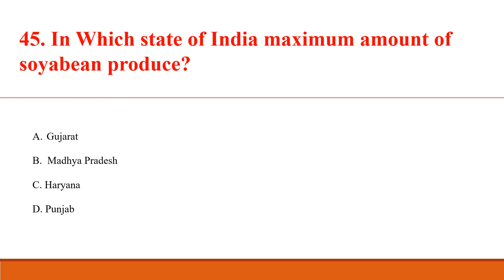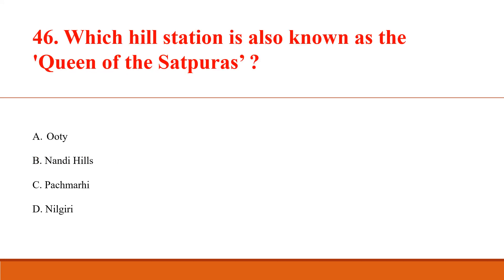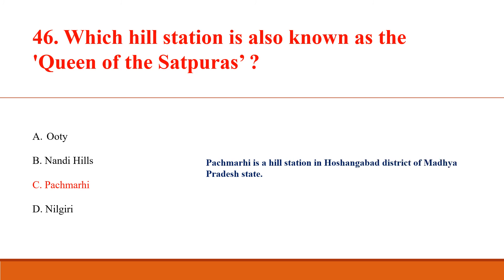In which state of India is the maximum amount of soya produced? Answer B: Madhya Pradesh. Which hill station is also known as the queen of the Satpuras? Answer C: Pachmarhi. Pachmarhi is a hill station in Hoshangabad district of Madhya Pradesh state.